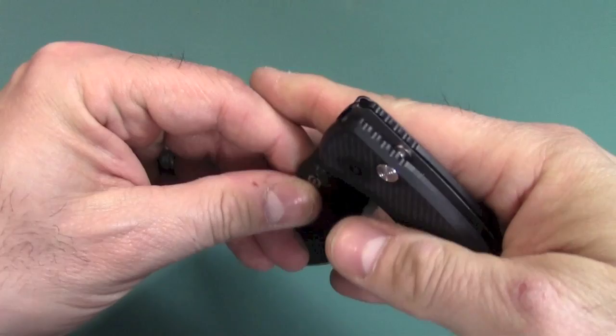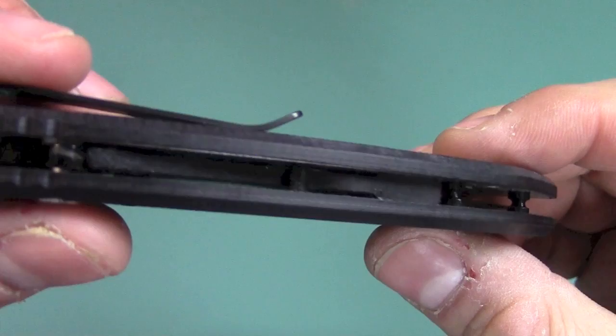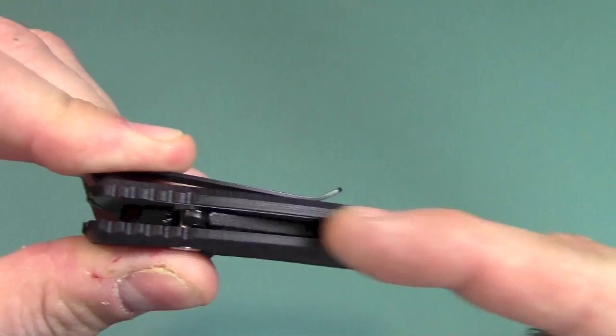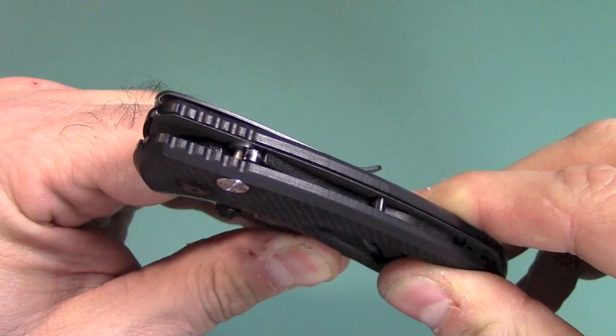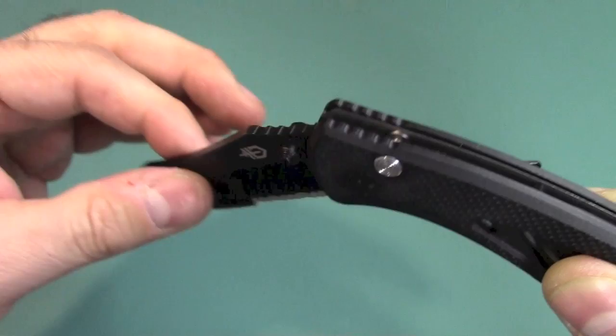First is the Assisted Opening or what Gerber calls FAST, which stands for Forward Action Spring Technology. In real words, all it is is like a torsion bar. It's just a bar that's pushing down on the blade. So it's pushing it, helping it to stay closed. But once you get over the threshold there, then it's going to push.